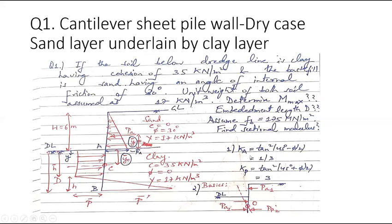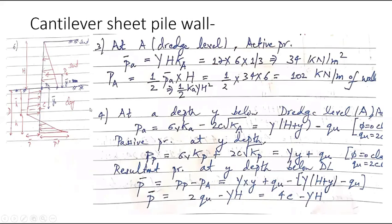Ka is given by tan²(45 − φ/2) and Kp is given by tan²(45 + φ/2), which comes out to be 3. Now we calculate the active pressure at different levels. The dredge level is the horizontal reference line. The active stress at the dredge level is γHKa = 17 × 6 × (1/3) = 34 kN/m².